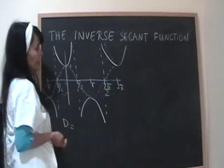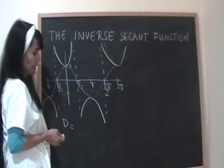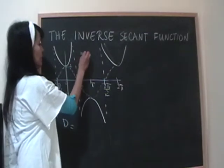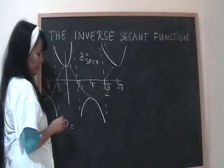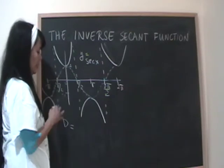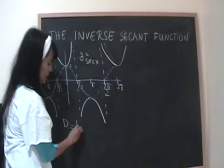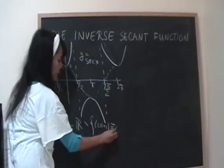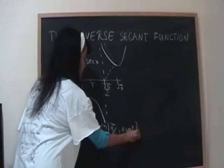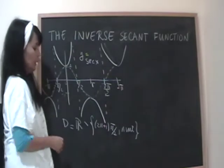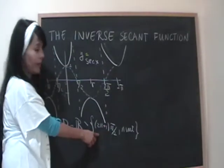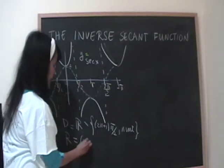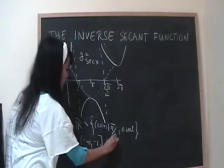Secant has asymptotes like the tangent function because secant is one over cosine. So y = sec(x) = 1/cos(x). Cosine is zero at odd multiples of π/2, so the domain is all real numbers except (2n+1)π/2 where n is an integer. Those odd multiples of π/2 are the asymptotes. The range is negative infinity to negative one, union one to infinity.